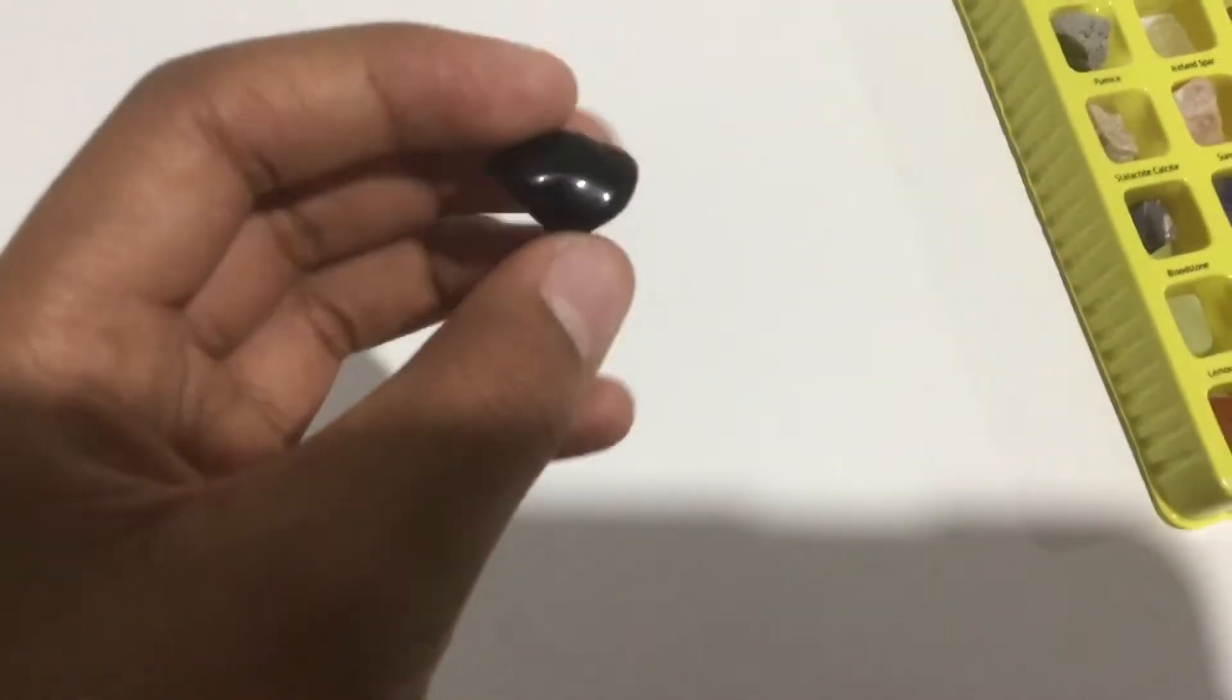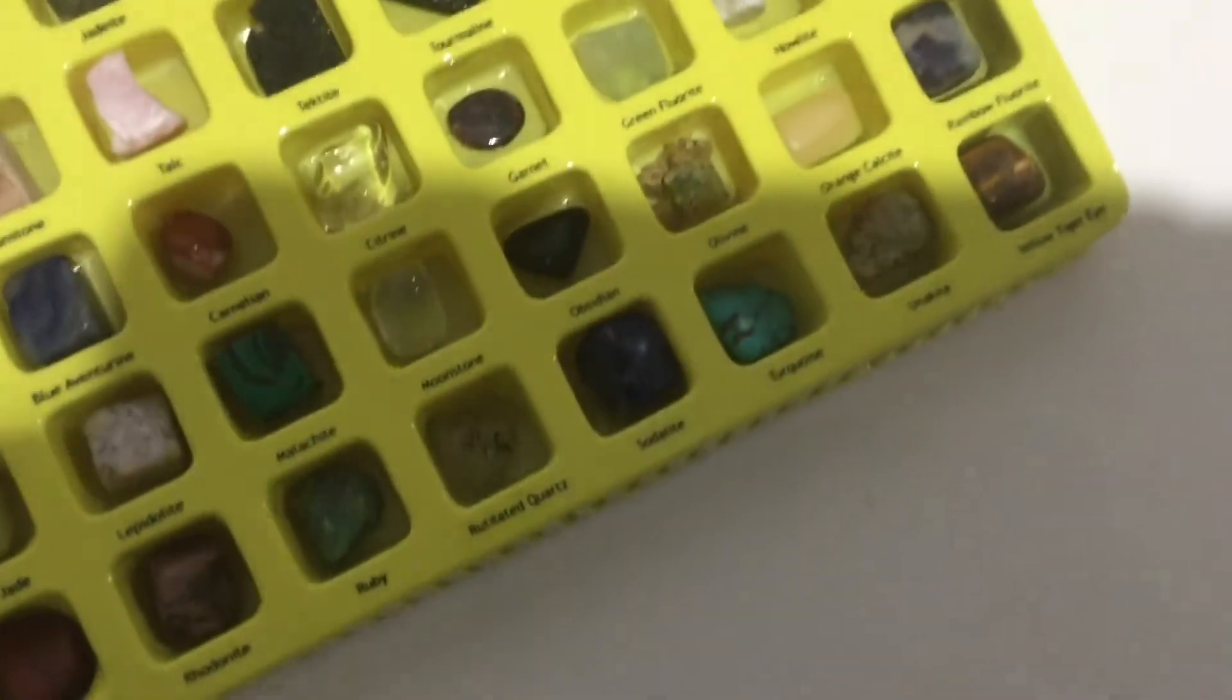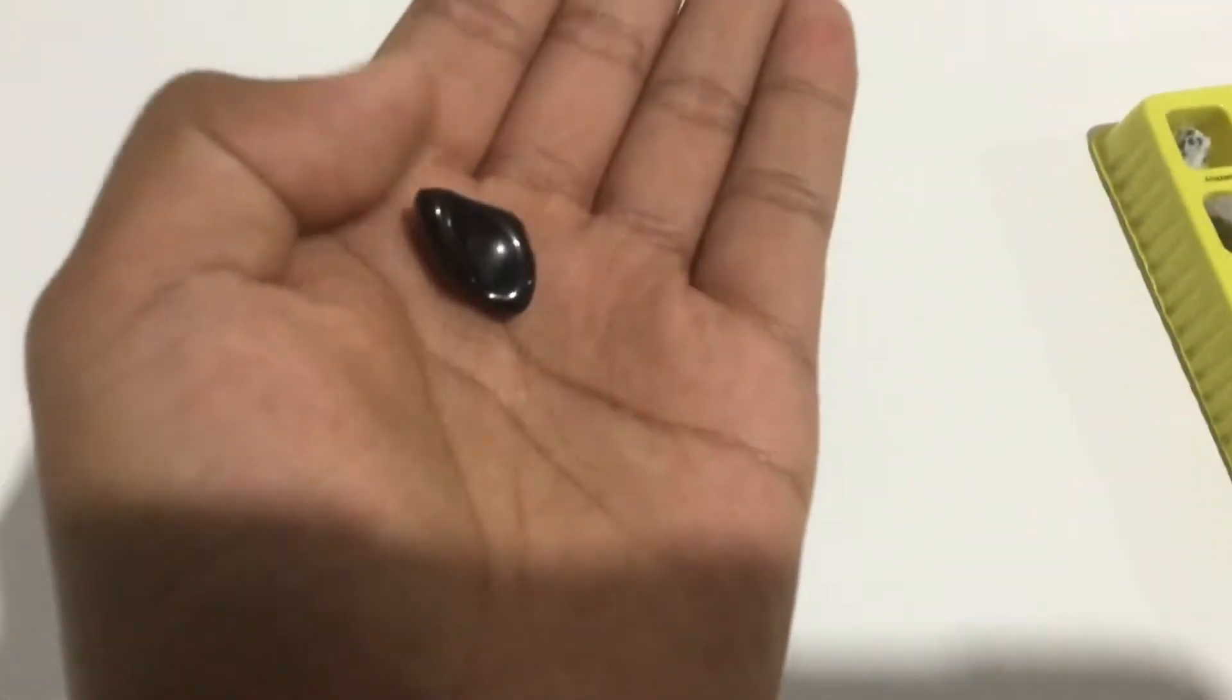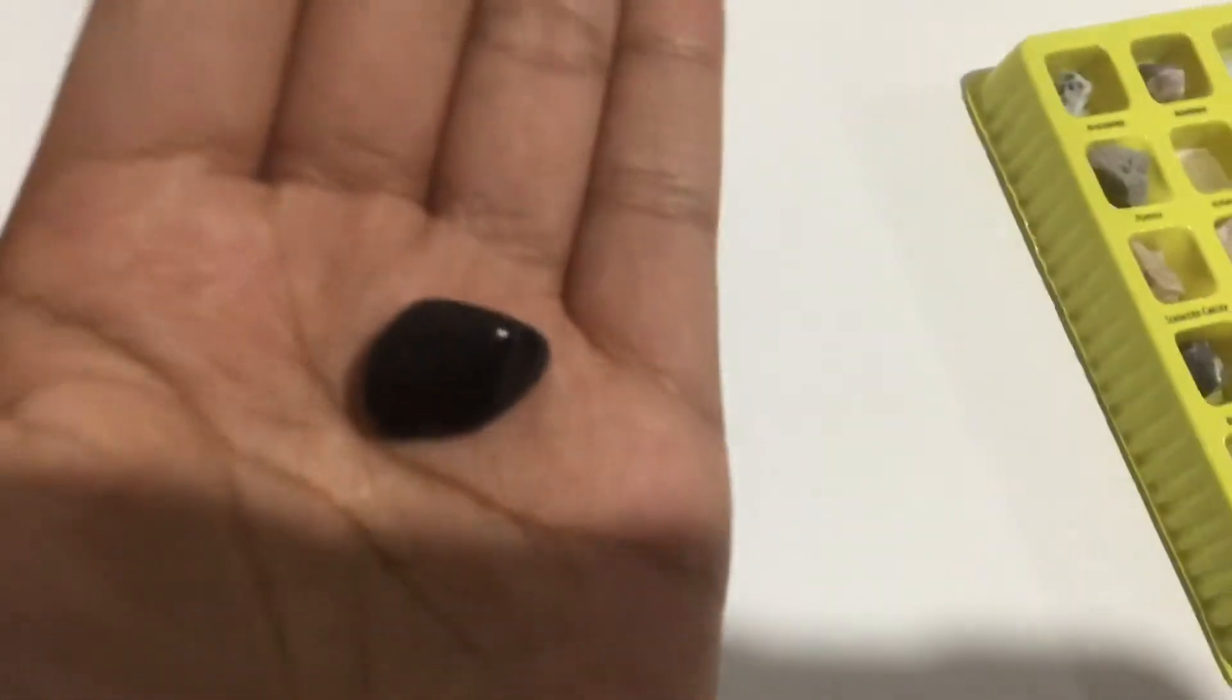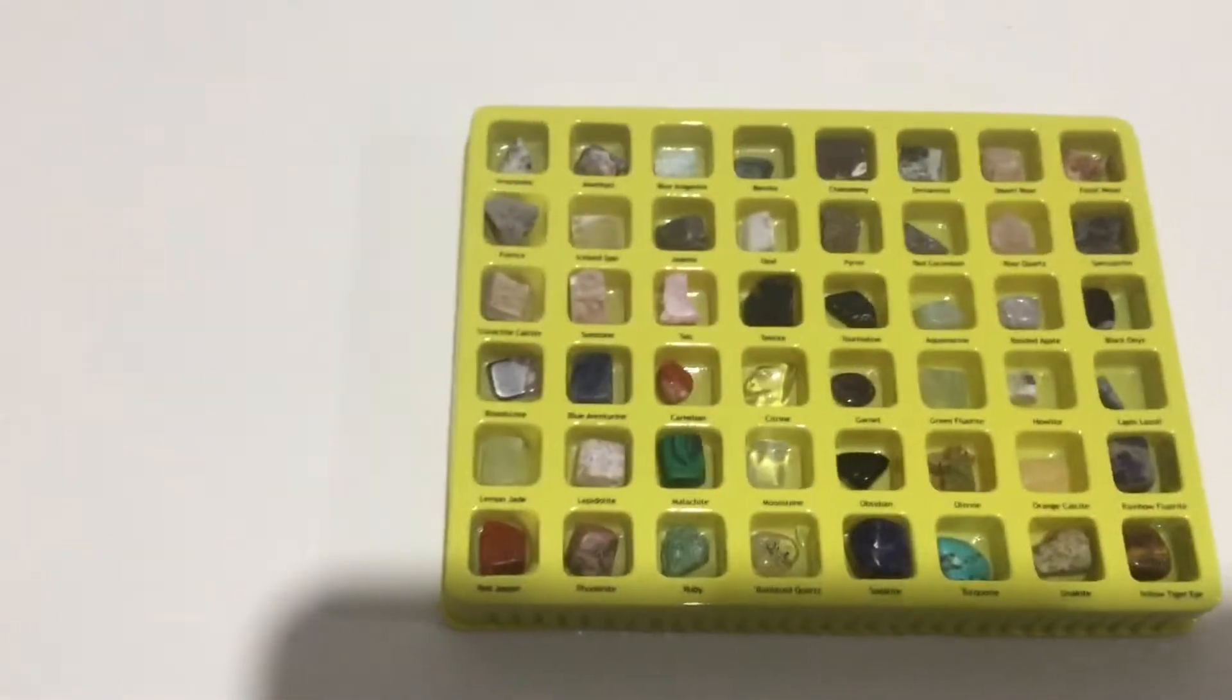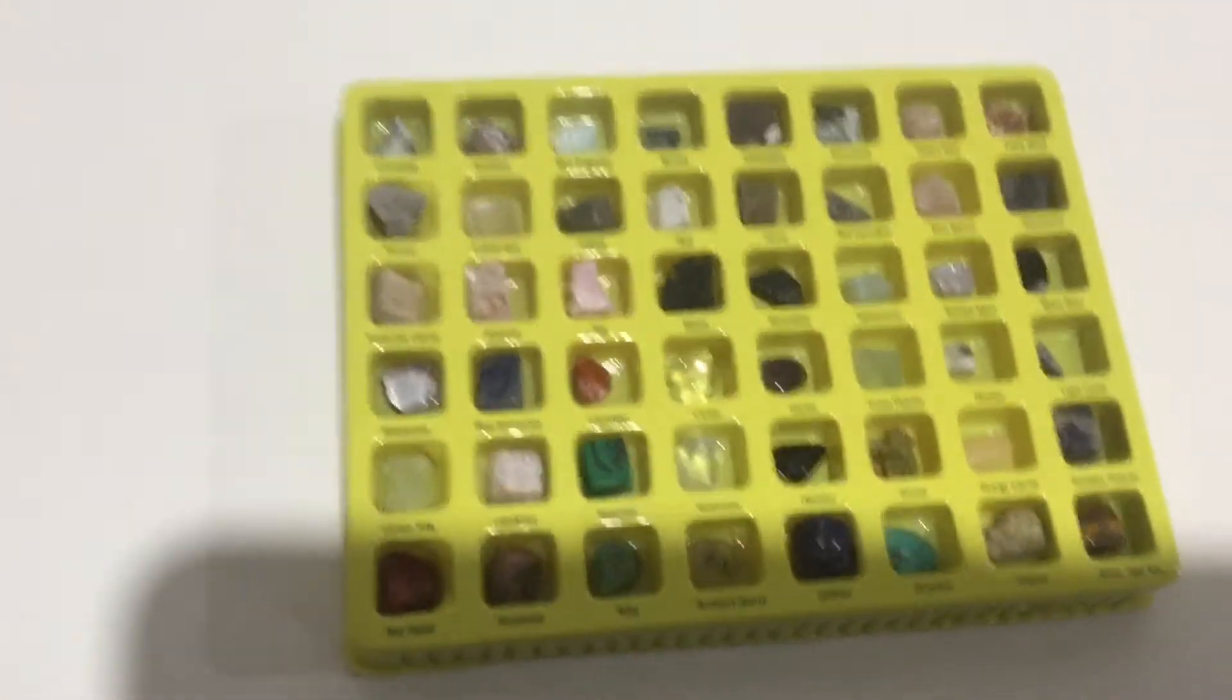Black quartz looks like obsidian. I have it there. I don't know if you can see it by the shadow, but this is black quartz, not the same thing as obsidian, but it does look like it. Now we're gonna go on to this, like at least half of them are polished and half of them are unpolished.